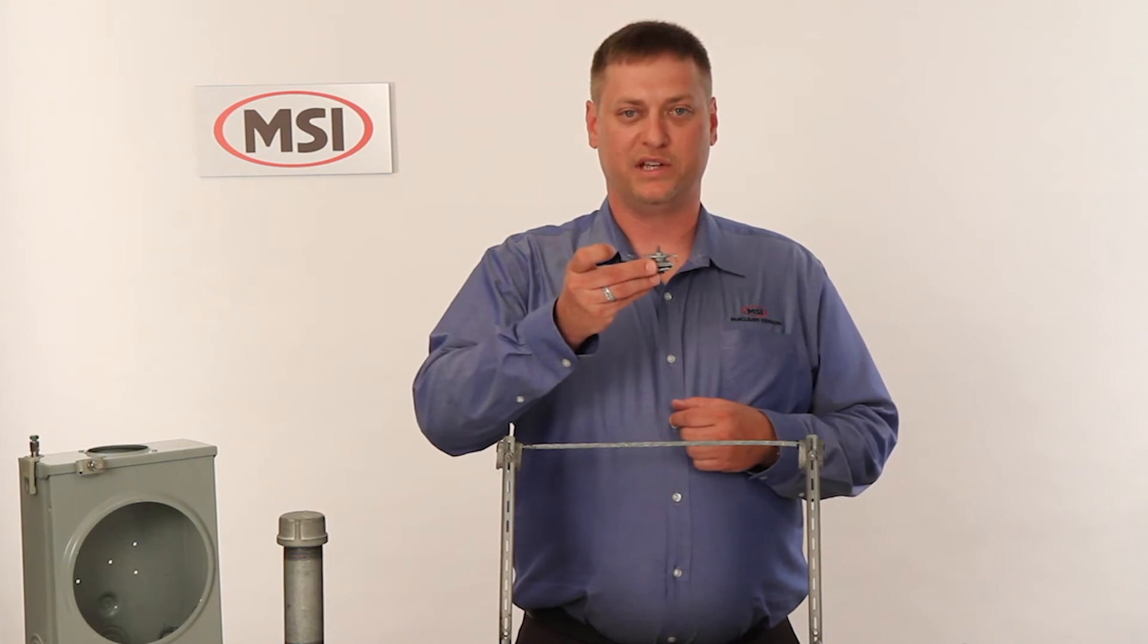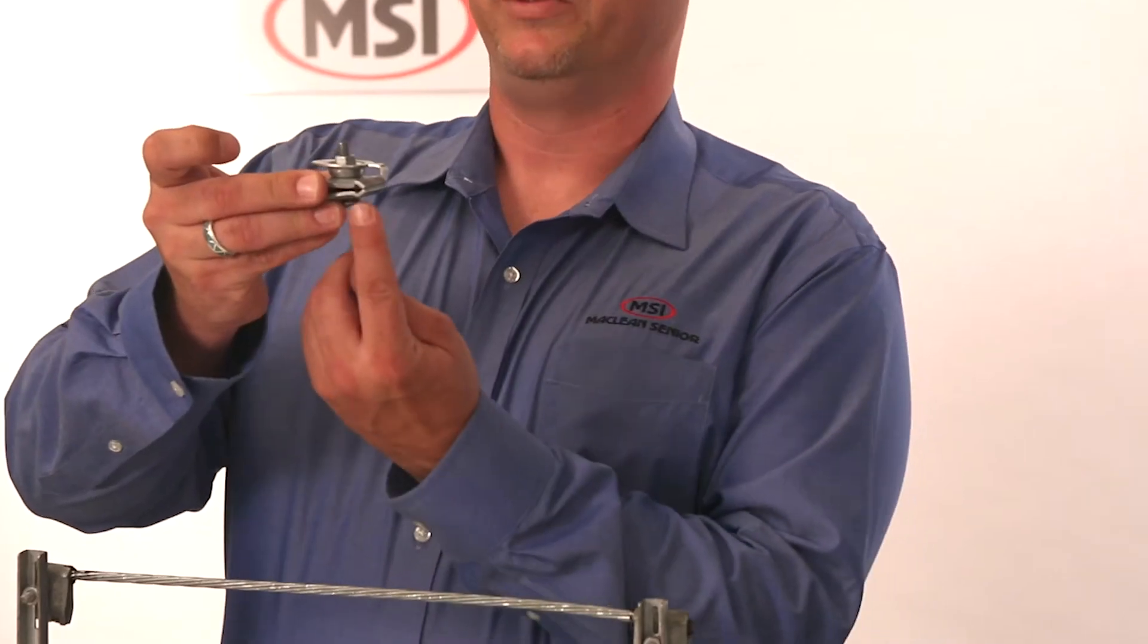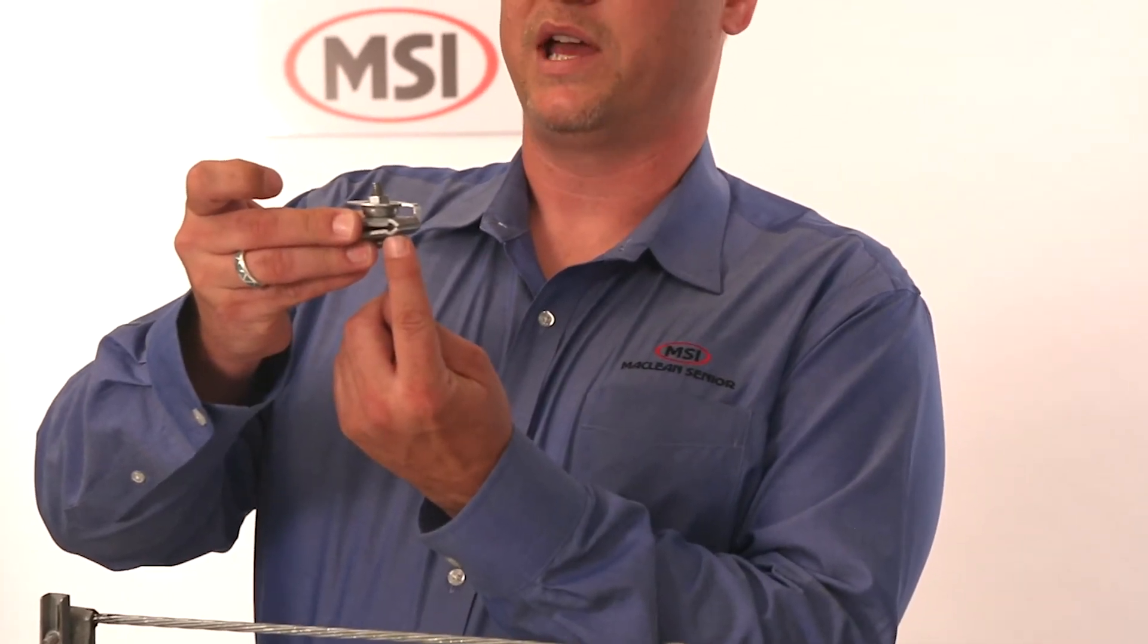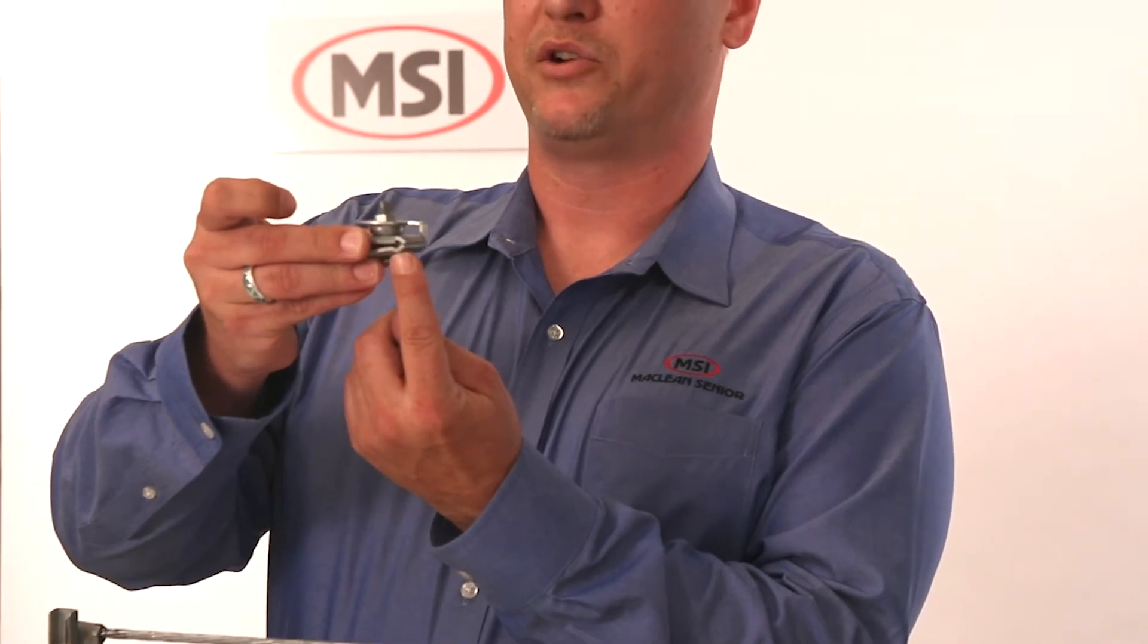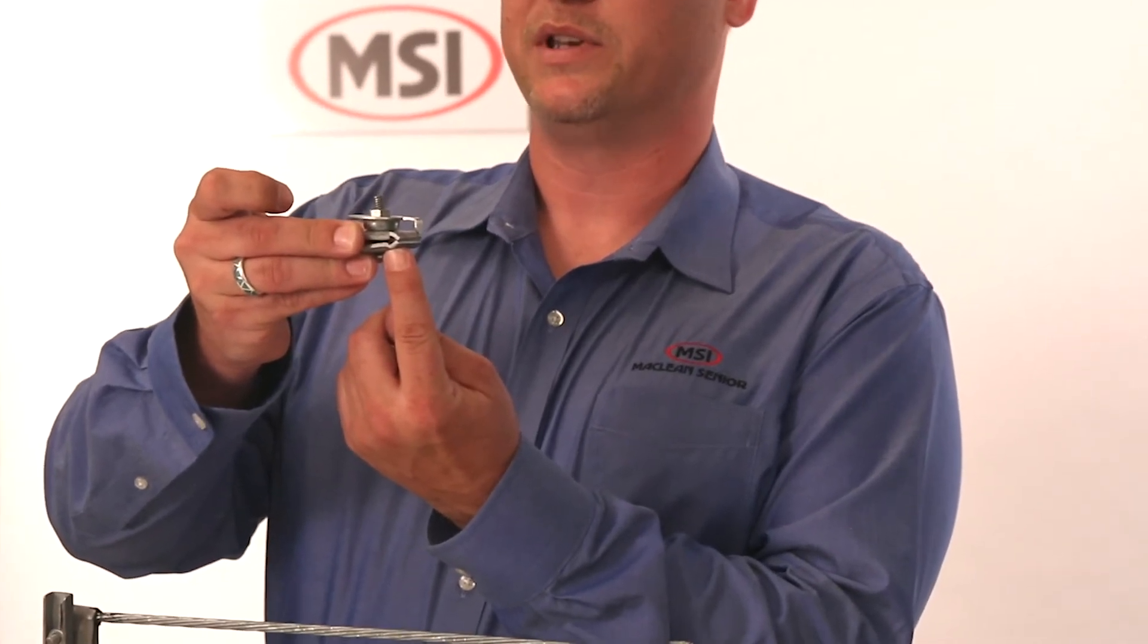Another benefit you will see on the multi-span clamp are these small jaws on the attachment. Those help to lock into the strand keeping this attachment nice and tight.